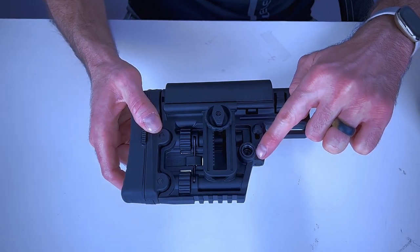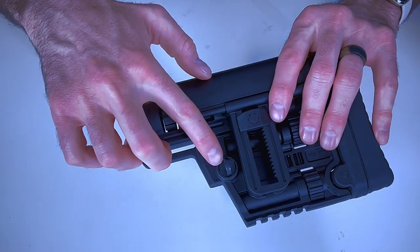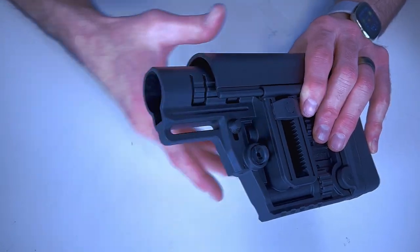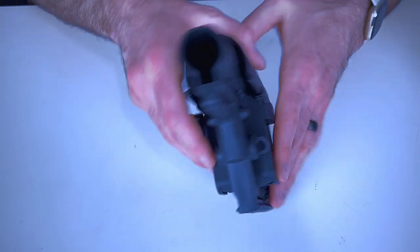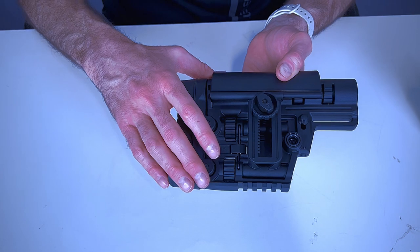You have a QD cup right here on this side and on the other side you have a J hook slot. This can be unscrewed and flipped around so you can have the cup on either side or the hook on either side.